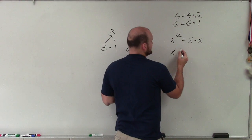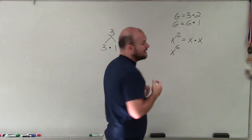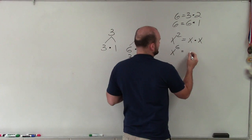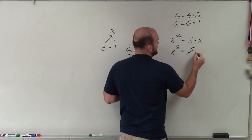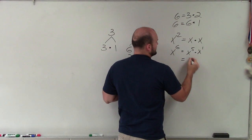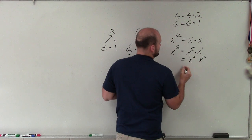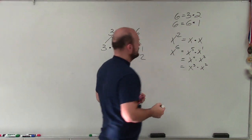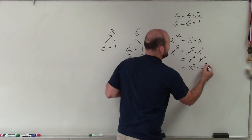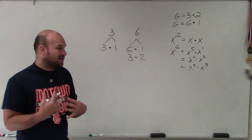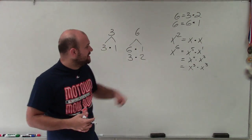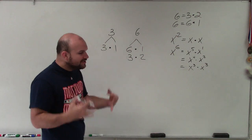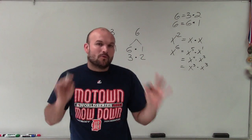Let's look at x to the sixth. Remember when we multiply variables we add the exponents. So x to the sixth could be x to the fifth times x to the first, or x to the fourth times x squared, or x to the third times x to the third. Those are all different ways to factor x to the sixth — rewriting it as a product of its factors.